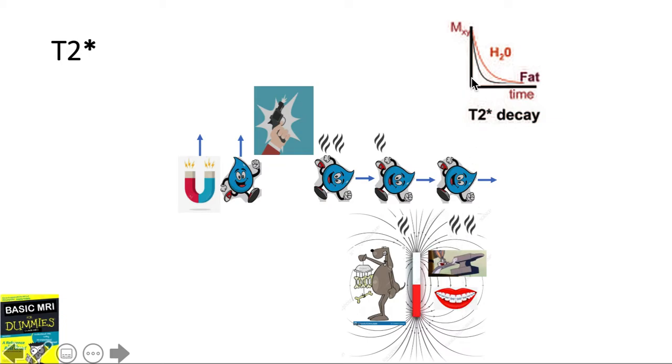In this graph we see that the T2 star decay in both water and fat are fast, much faster compared to the T2 decay or T2 relaxation, which is a relaxation due to the protons sharing its energy to other spinning electrons.